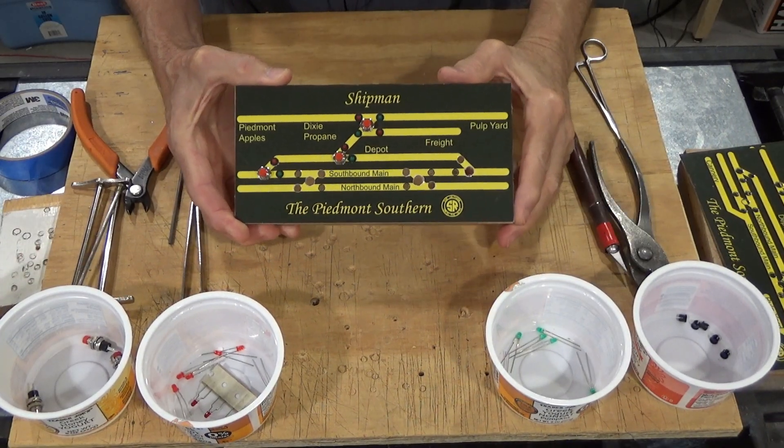After that, we'll go ahead and make some solder connections in preparation for wiring the control panel to the accessory decoder. And that'll pretty much wrap up for the day. Okay, let's get started.